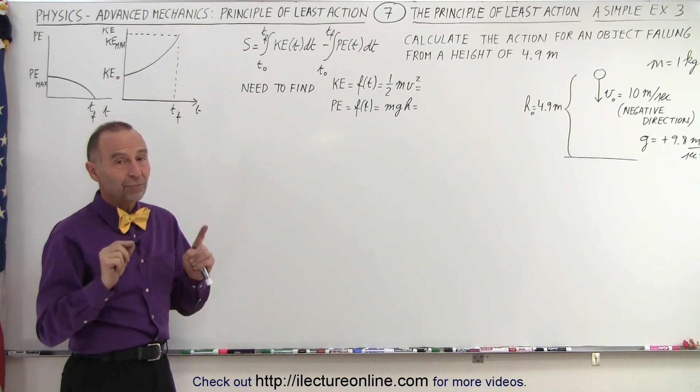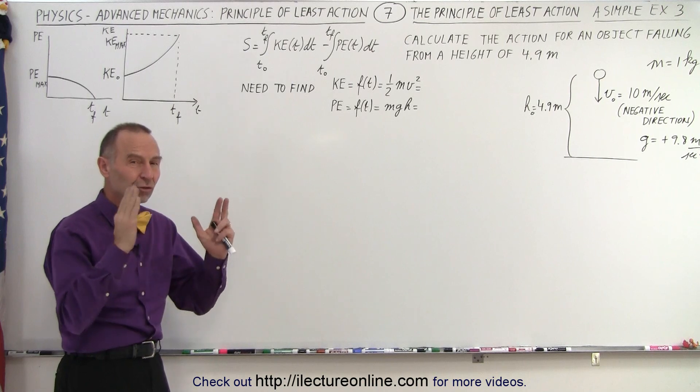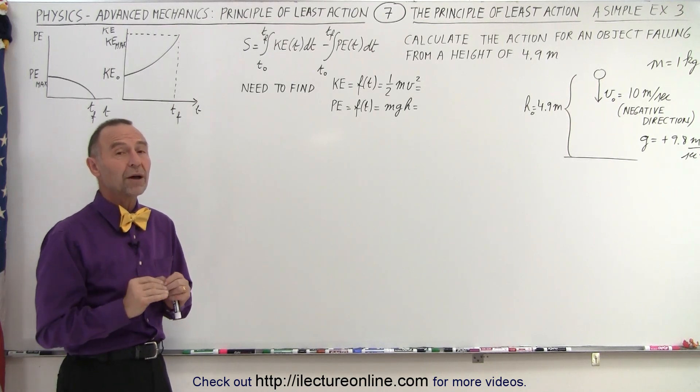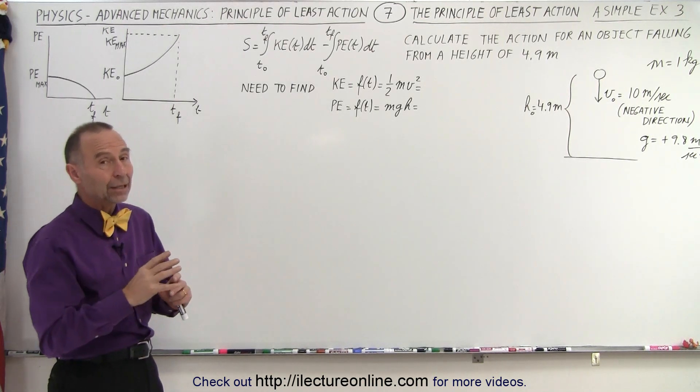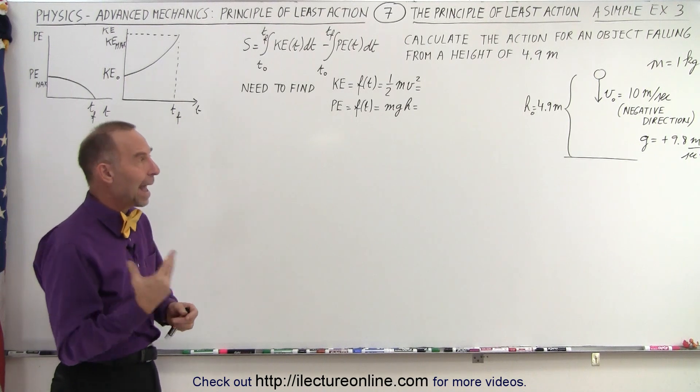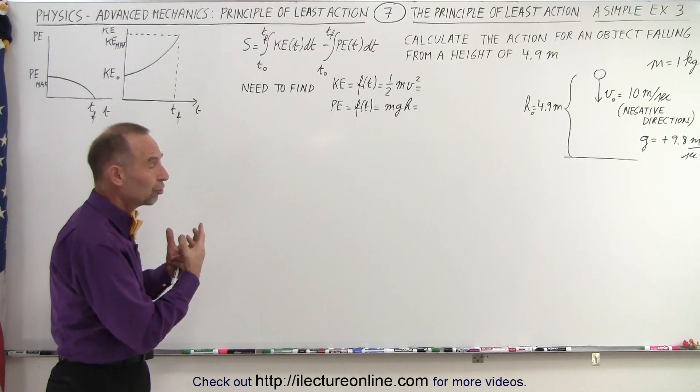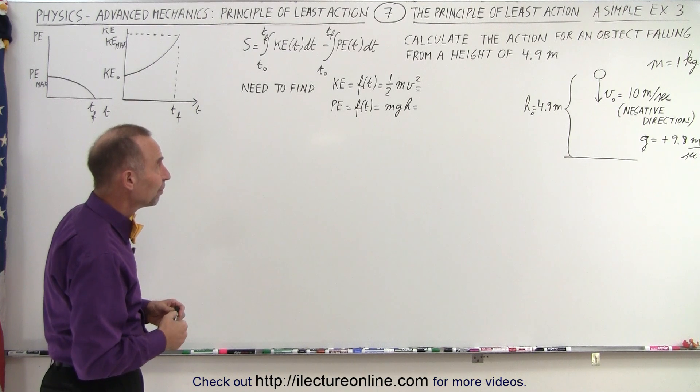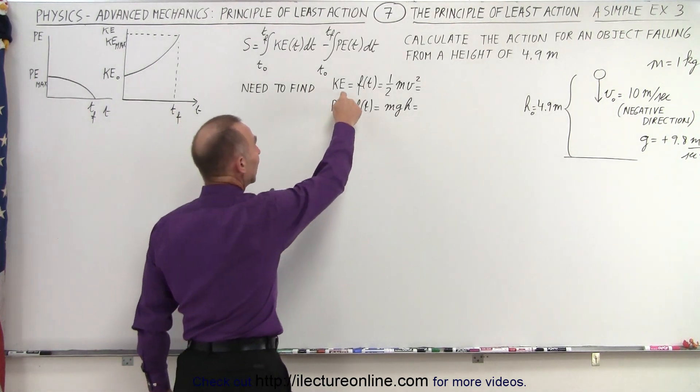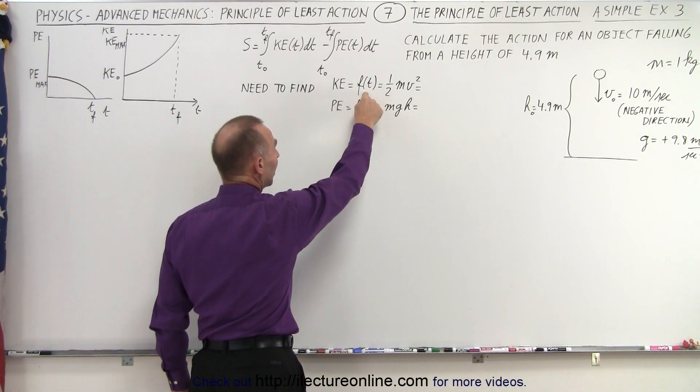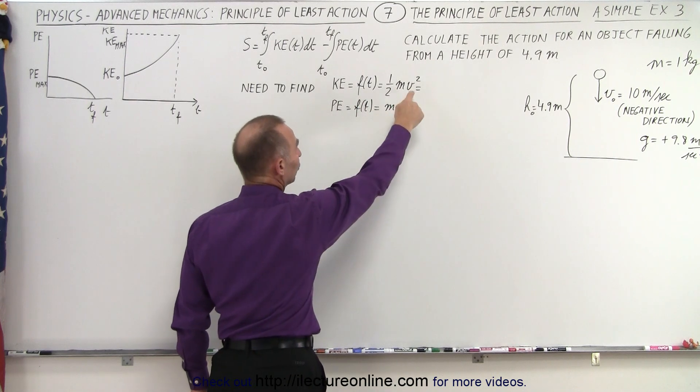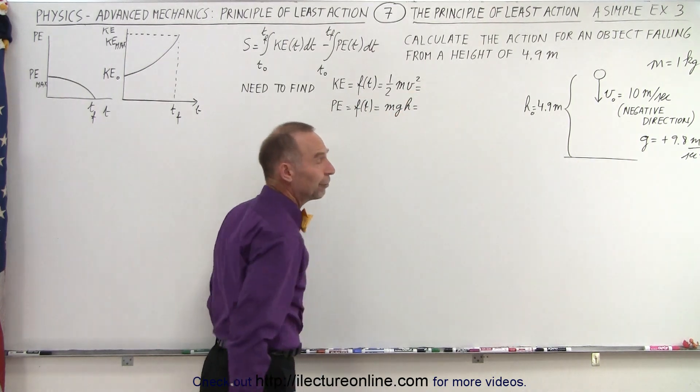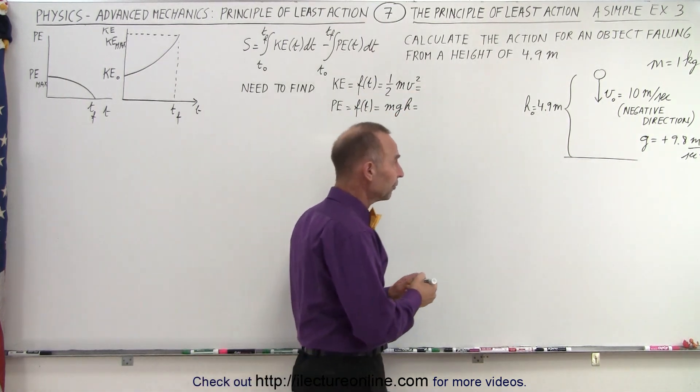It doesn't matter. It just matters that it's the path of least action, so that number will be the smallest possible, and any other path taken will give us a larger action. Again, we need to find the kinetic energy and the potential energy as functions of time. Of course, originally they're a function of velocity and height, so we have to convert.